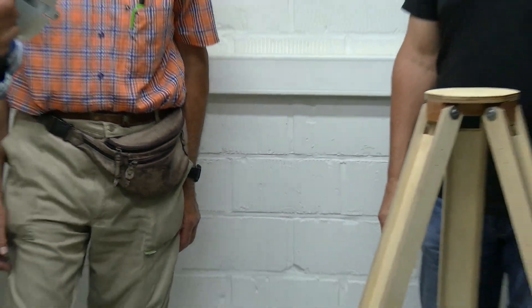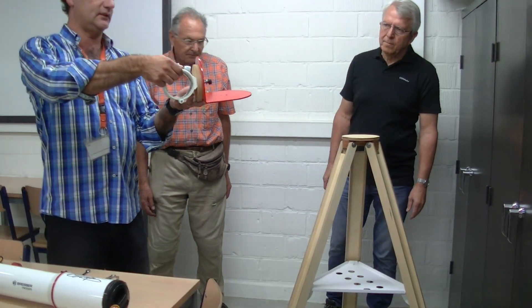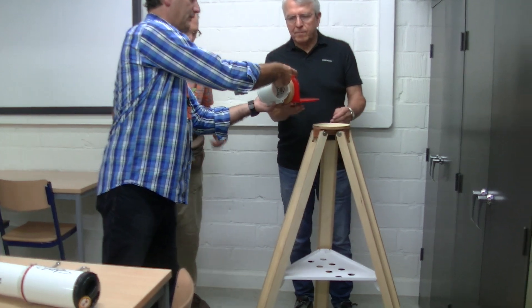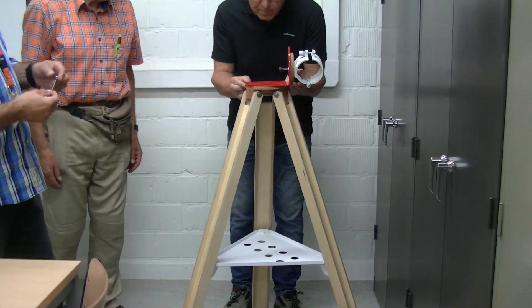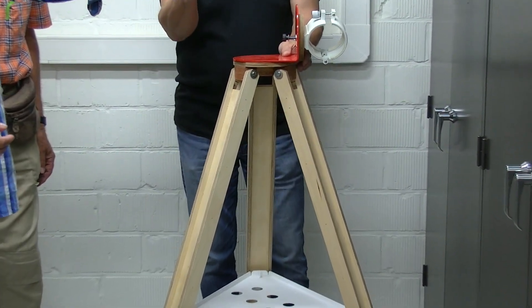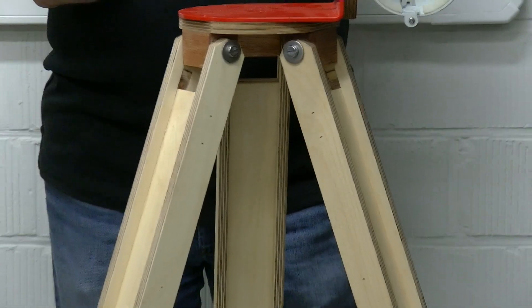On this tripod you will install the red angled plate, which will hold the telescope. So this goes on top. And then you need to pay attention to the central screw. You first insert the screw from the top with a washer.